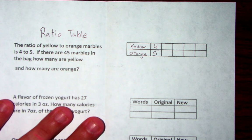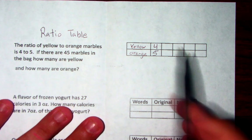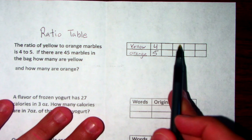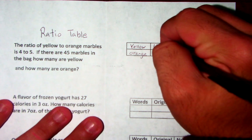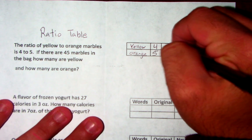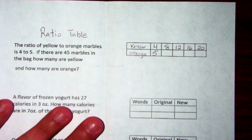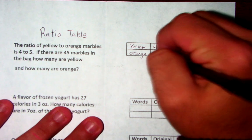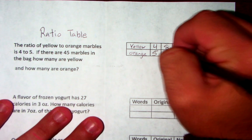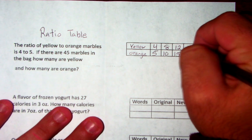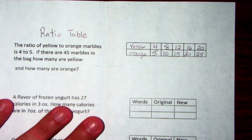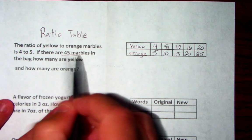Now it says if there are 45 marbles in the bag, how many are yellow and how many are orange? Well, actually we're just going to fill in this table. My yellows are going by 4s, so we have 4, 8, 12, 16, 20. And my oranges are going by 5, so that'd be 5, 10, 15, 20, 25.